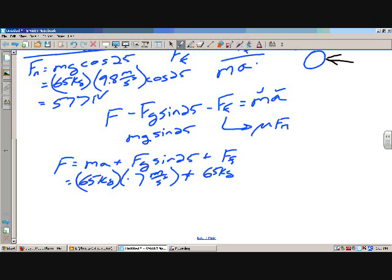Fg is mass times 9.8, that's what I was thinking, times sine 25 plus my frictional force, which is 0.2 times the normal force, which is 577.